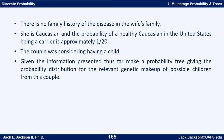Now there's no family history of disease in the wife's family. She is Caucasian. The probability of a healthy Caucasian in the United States being a carrier was given as approximately 1/20. The couple was considering having a child. Given this information, make a probability tree showing the probability distribution for the relevant genetic makeup of possible children.